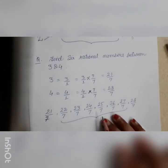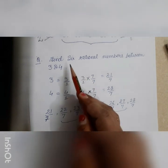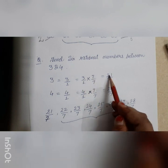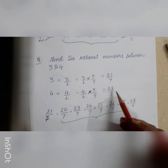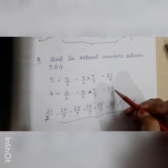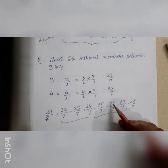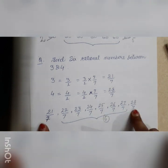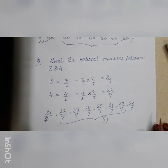Another example: find 6 rational numbers between 3 and 4. Write 3 as 21/7 and 4 as 28/7 — we multiply by 7/7 because 6 plus 1 equals 7. Between 21/7 and 28/7 we have 22/7, 23/7, 24/7, 25/7, 26/7, and 27/7 — that is 6 rational numbers. Remember not to include the given numbers when finding numbers in between. Next topic will be irrational numbers.